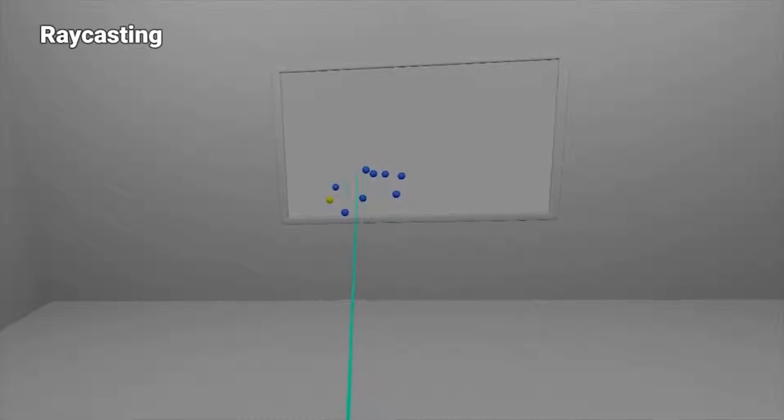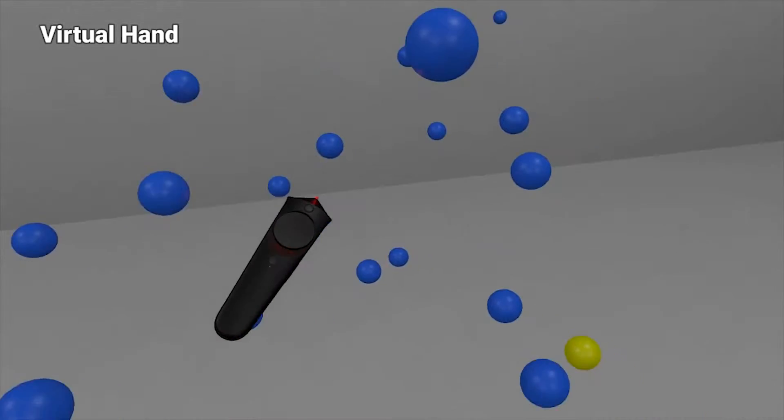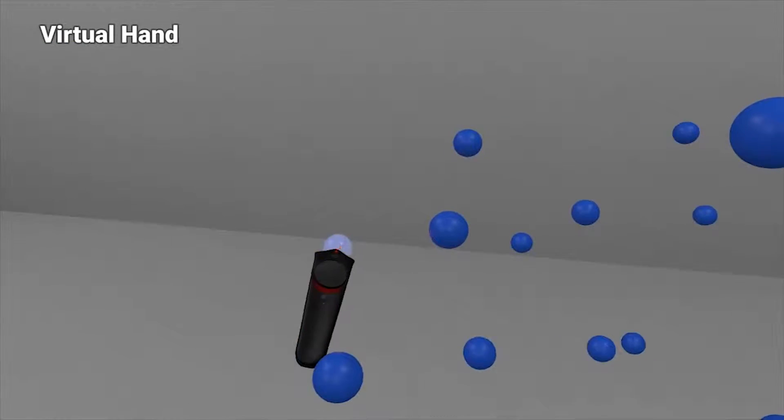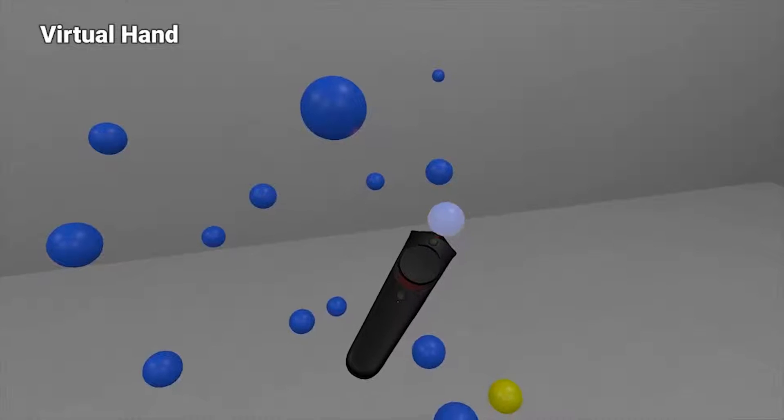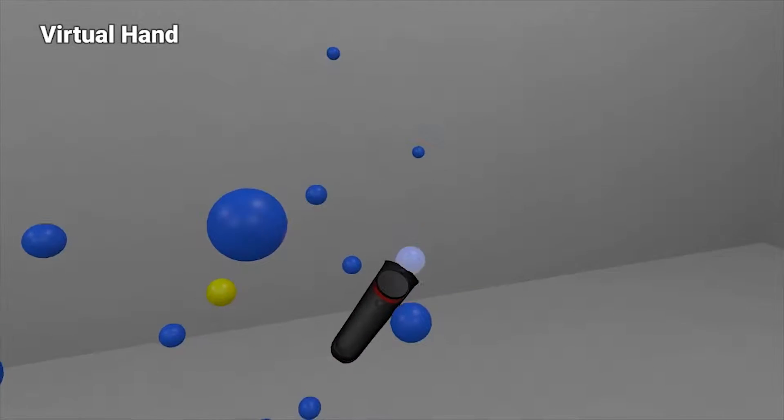Raycasting is the most common target pointing technique in virtual reality environments. However, performance on small and distant targets is impacted by the accuracy of the pointing device and the user's motor skills. Current pointing facilitation techniques are only applied in the context of the virtual hand, for targets within reach.